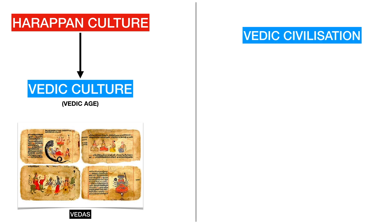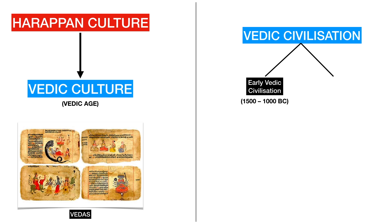Vedic civilization can further be classified into two parts: early Vedic civilization, which lasted from 1500 to 1000 BCE, and the later Vedic civilization, which lasted from 1100 to 500 BCE.